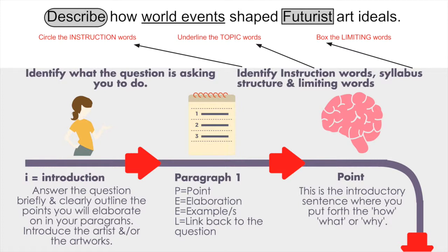Then we've got the PEEL part of IPEEL. PEEL is: P for point, E for elaboration, E for examples, and L for link back to the question. So in paragraph one, you need to have a point, elaborate on that point, provide an example, and then link back to the question.